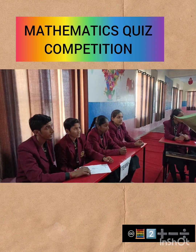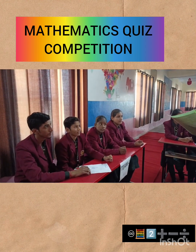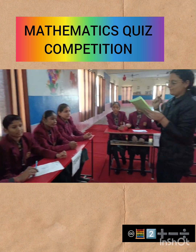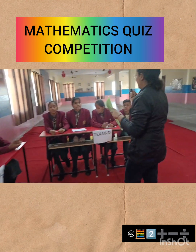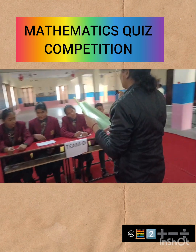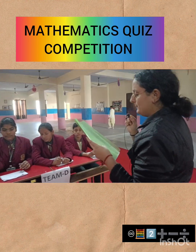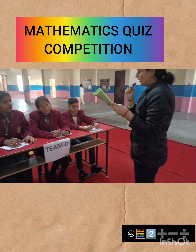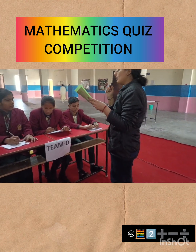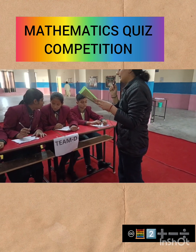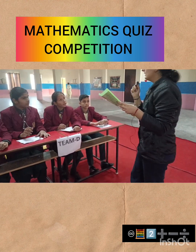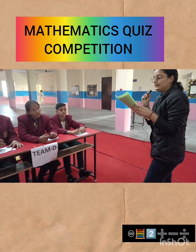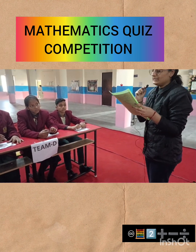Next question for Team C: the square root of 49 is — 7 is the right answer. Next question for Team D: the cube of an even number is always — even. Even is the right answer.